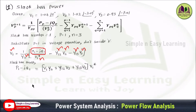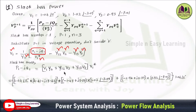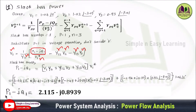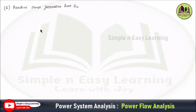The slack bus power equation becomes: P1 − jQ1 = V1* × (Y11·V1 + Y12·V2 + Y13·V3). Substitute all values — V1, Y11 from the Y-bus matrix, then Y12, V2, Y13, V3. Use complex mode in the calculator to solve. Calculate each term separately: 1.04∠0° multiplied by each admittance-voltage product, then sum to get the final slack bus power answer.